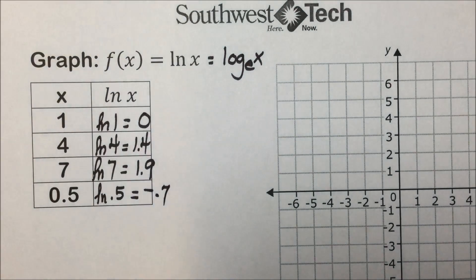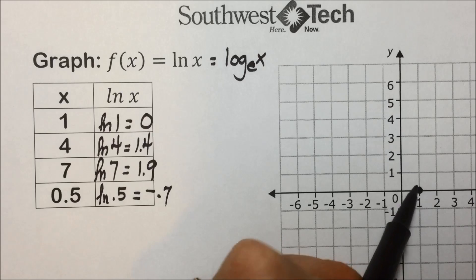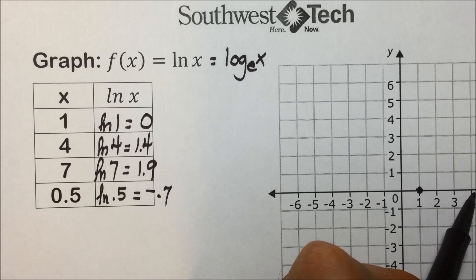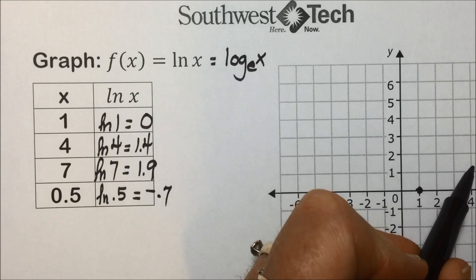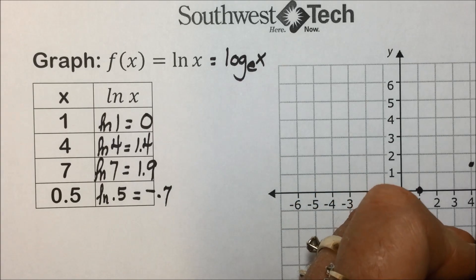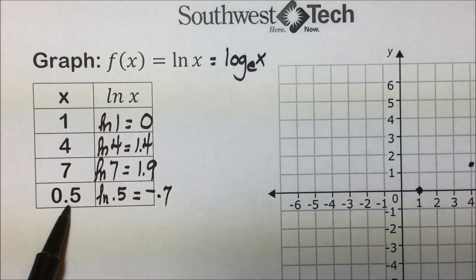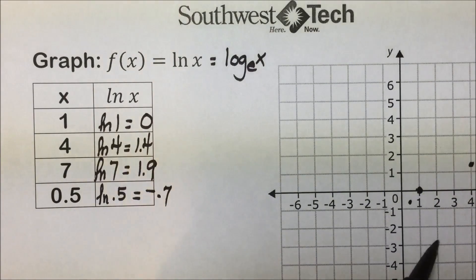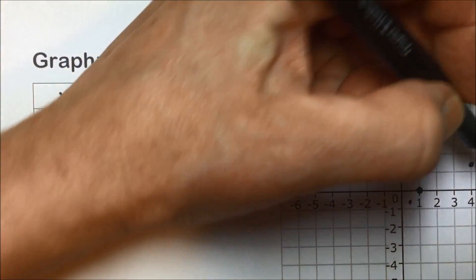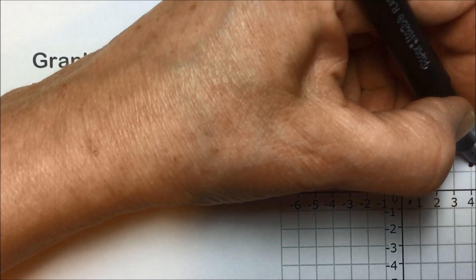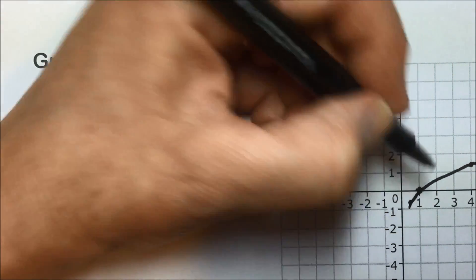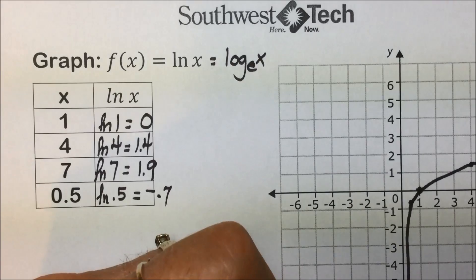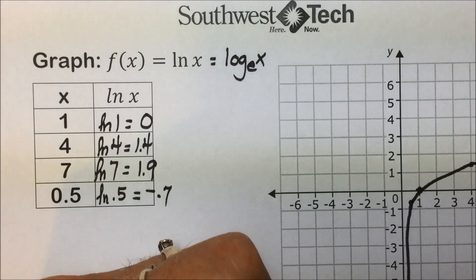Then drawing the graph with these points, we have 1, 0 for our first ordered pair. We have 4, 1.4. Then we have 7 at 1.9, and our x value of 0.5 halfway here has negative 0.7. So we're starting to make that dive down towards y values getting ever closer to negative infinity, and our graph getting ever closer to intersecting but not the y axis,